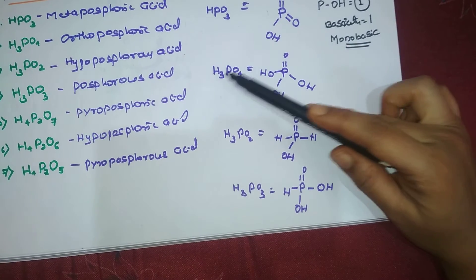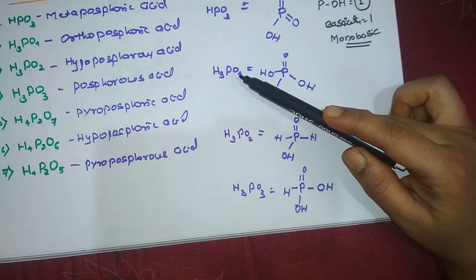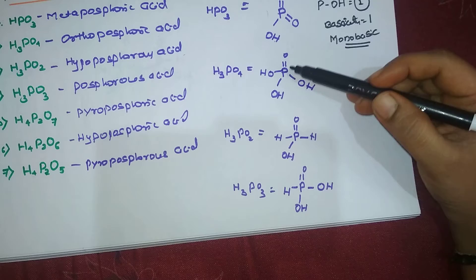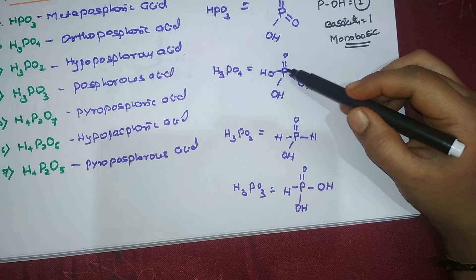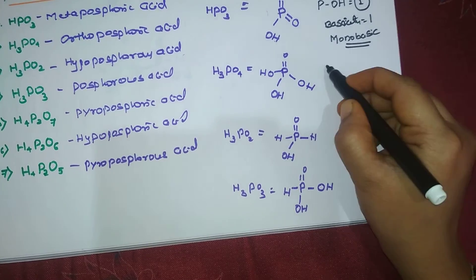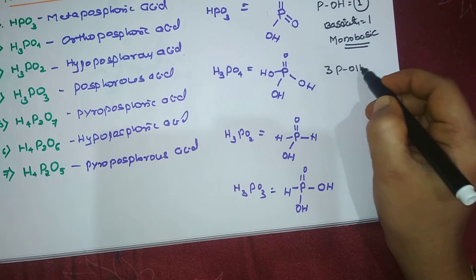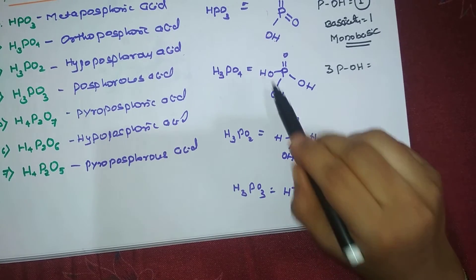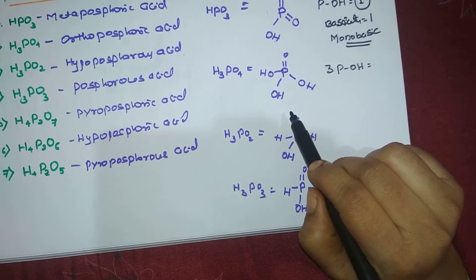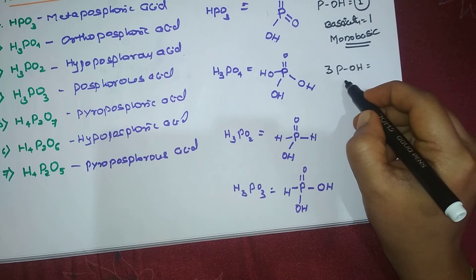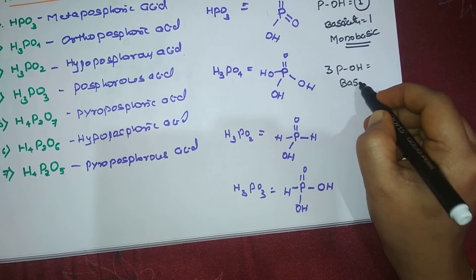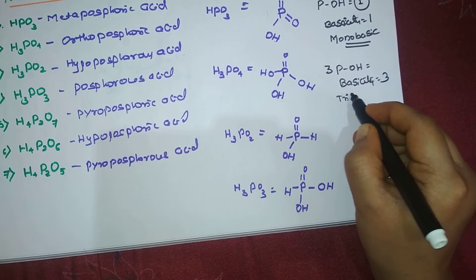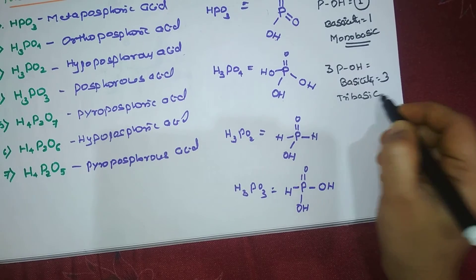Next is H₃PO₄, known as orthophosphoric acid. Here we have three P-OH bonds, so there are three replaceable protons. The basicity is 3 and it is tribasic in nature.